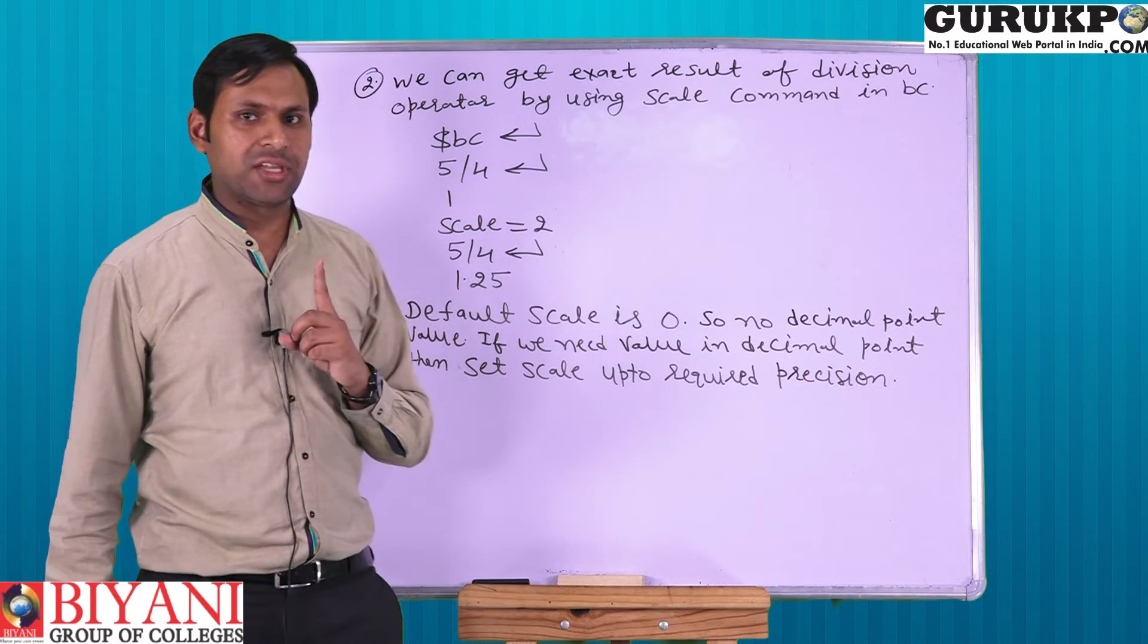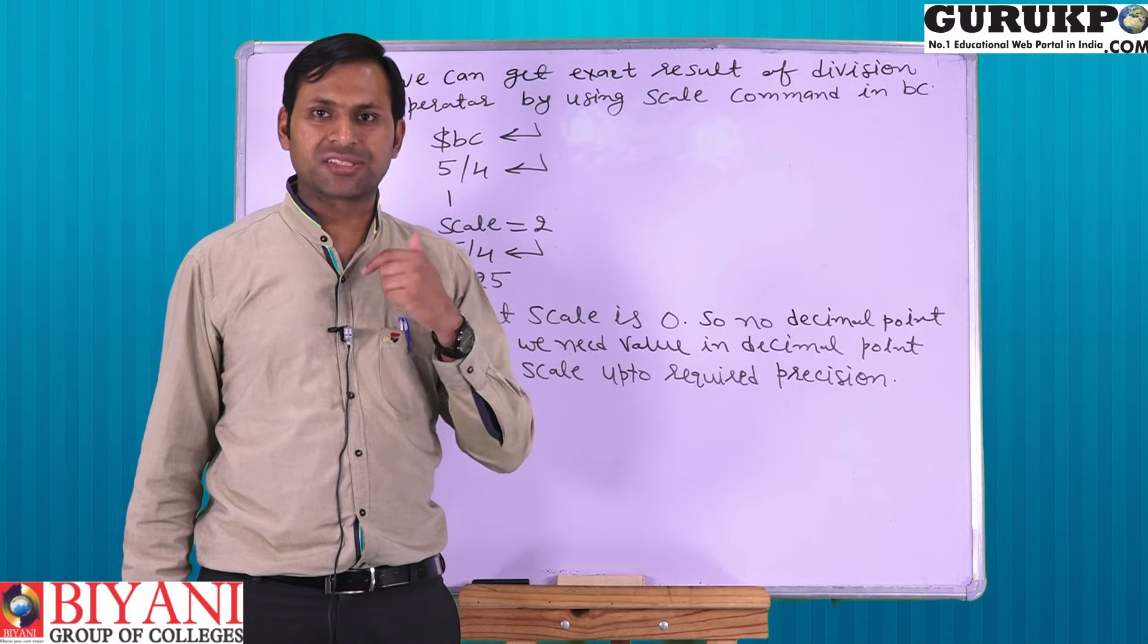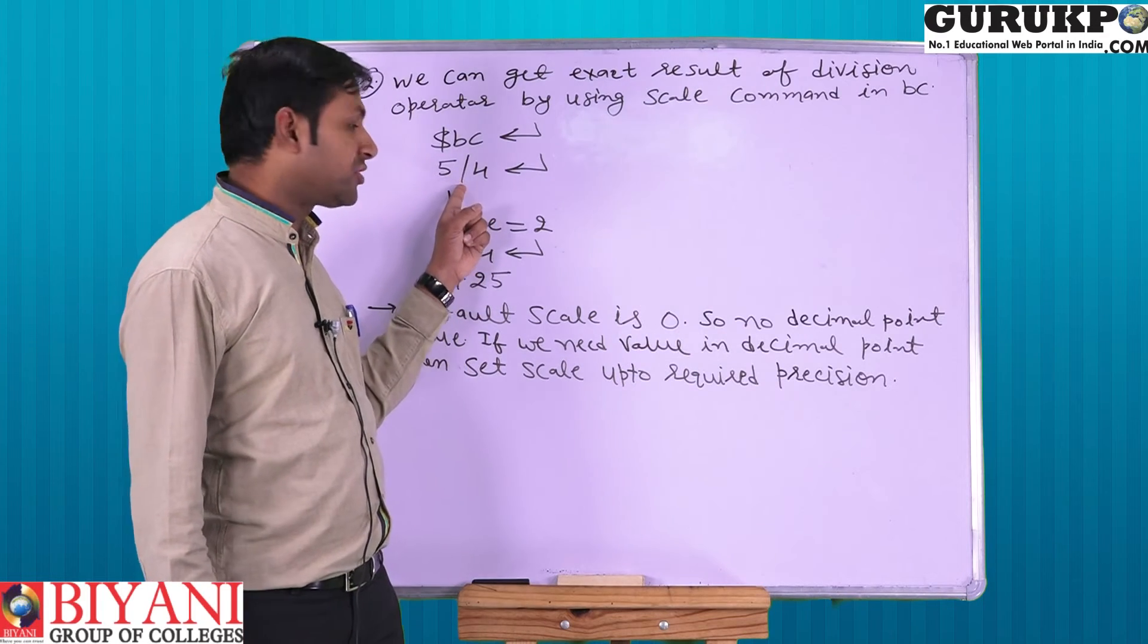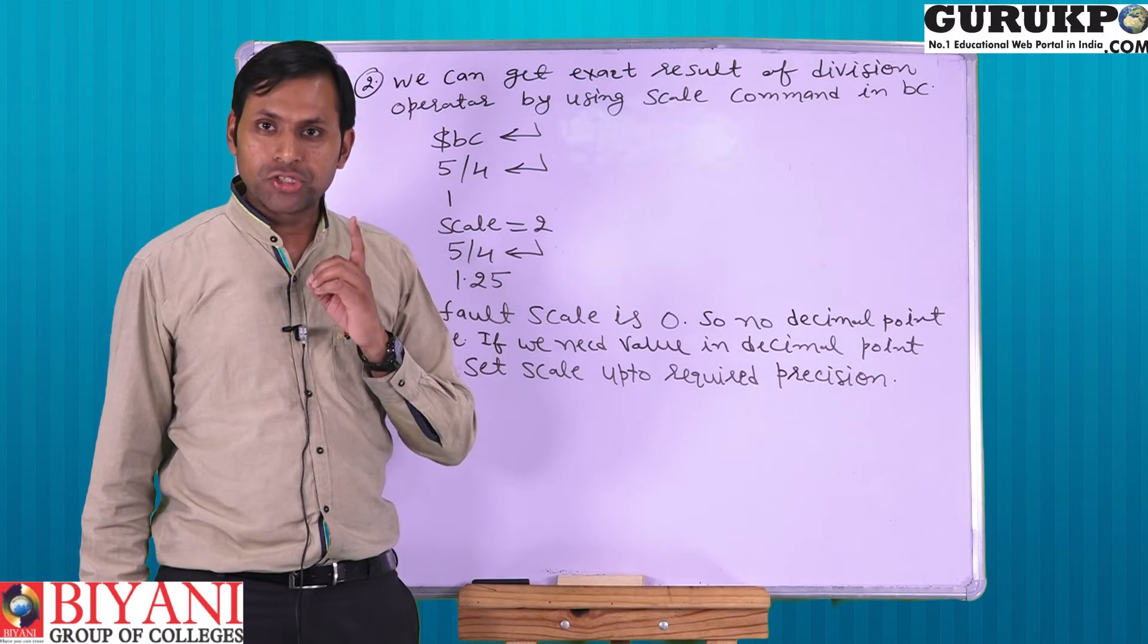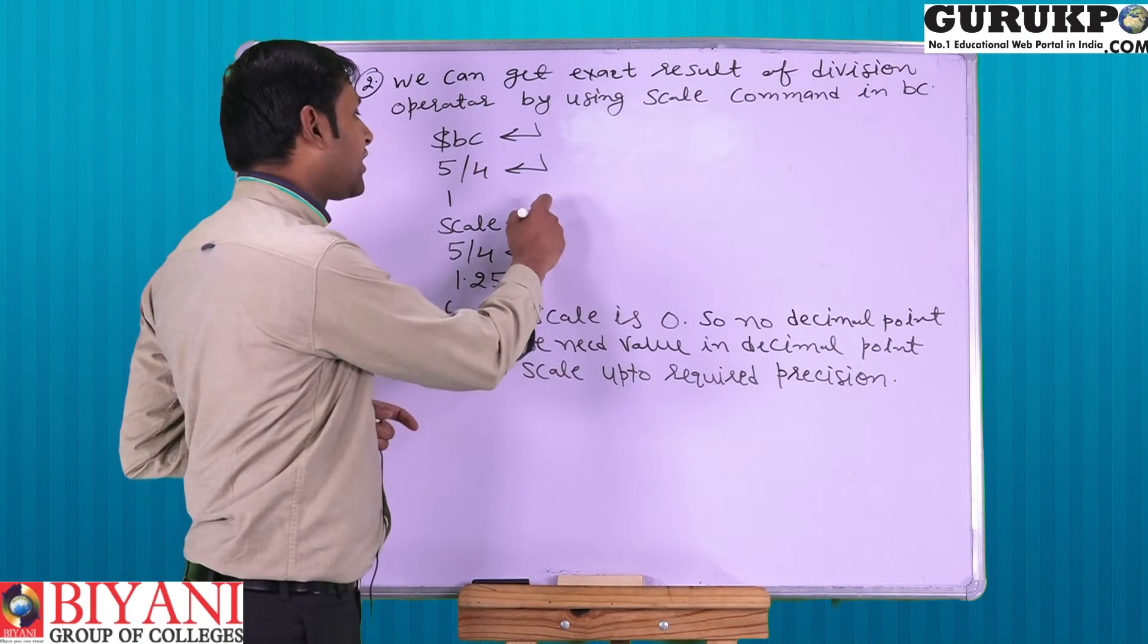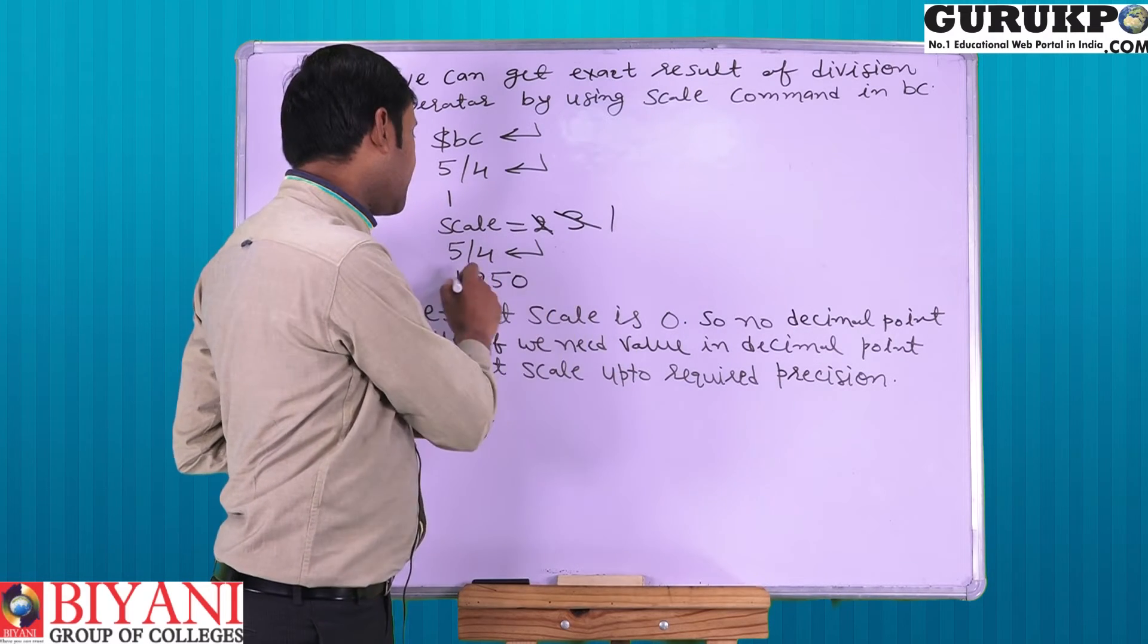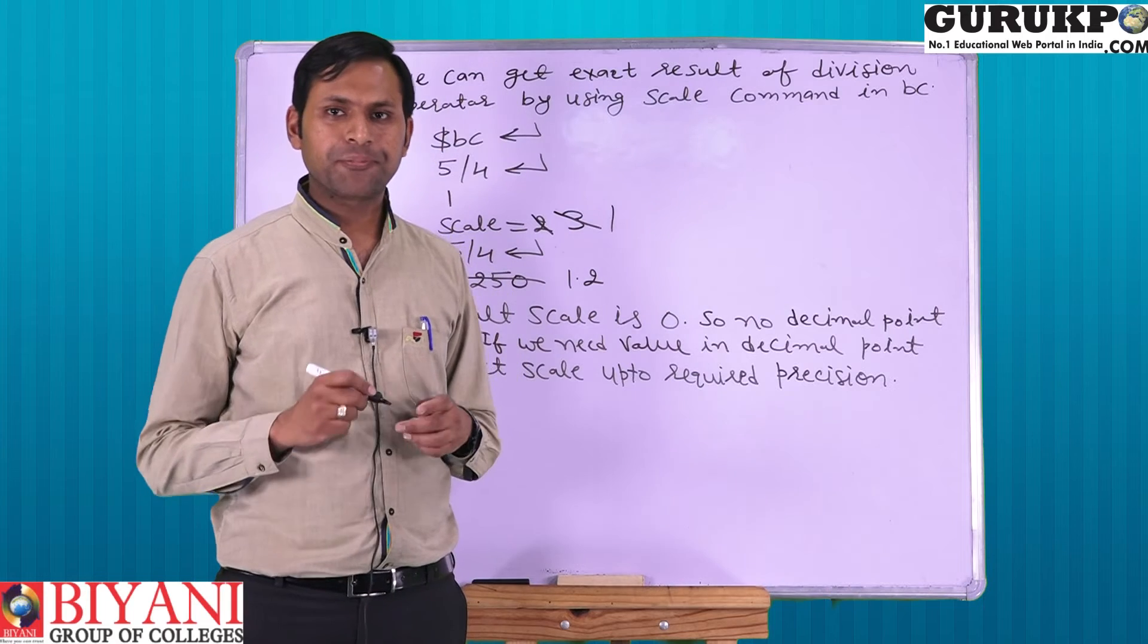Number one, we can do basic tasks. Number two, we can get result in decimal point by using BC. It is a very important concept. Whenever we do division, then result may be in decimal point, then we should use scale to get exact answer. If here scale is 3, then answer will be 1.250, and if scale is 1, then result will be 1.2. Getting this point?